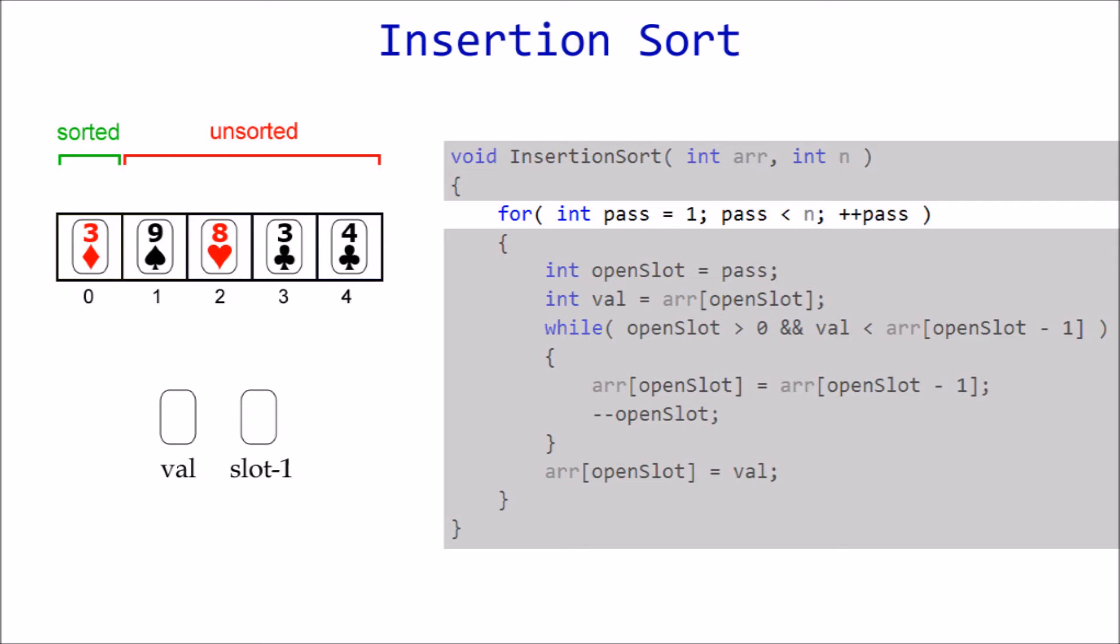9 is the first unsorted element, so this is where we need to create an opening. Open slot is set to the value of pass, which is 1, the position of card 9. 9 is stored in val, and then we enter the while loop for comparisons.